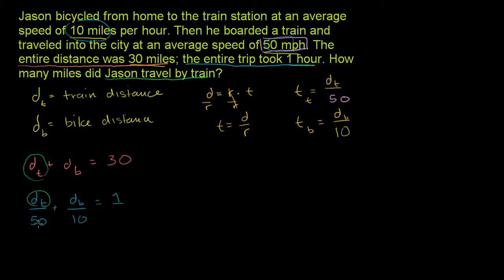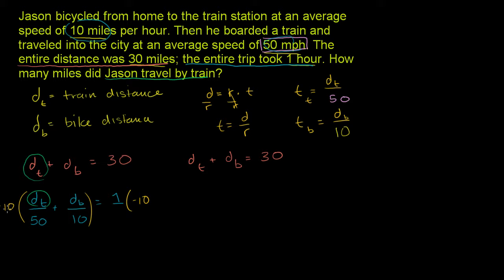The first equation is dt plus db equals 30. I want to cancel out db, so if I can turn the db term into a negative distance by bicycle and then add the two equations, they'll cancel out. The easiest way to do that is to multiply both sides of the second equation by negative 10, because negative 10 times db over 10 gives just negative db.